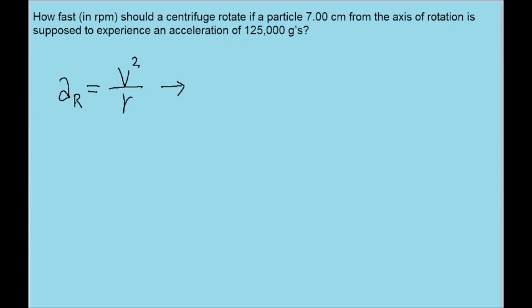We can use this to solve for v by multiplying both sides of the equation by r and then taking the square root. So the speed of the particle is equal to the square root of the angular acceleration times r.